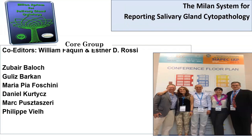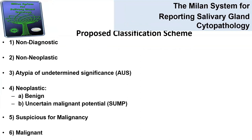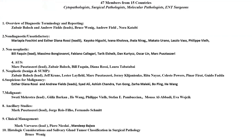The core group met in Milan. We have two editors — Dr. Aquin and myself — and several associate editors from all over the world. The classification proposes six diagnostic categories: non-diagnostic, non-neoplastic, atypia of undetermined significance (AUS), neoplastic benign and salivary gland neoplasm of uncertain malignant potential (SAMP), suspicious for malignancy, and malignant. This is the general scheme of the Milan system.